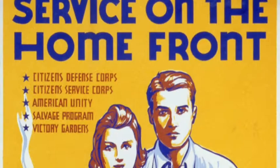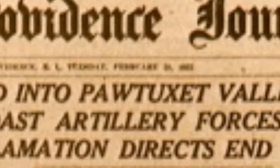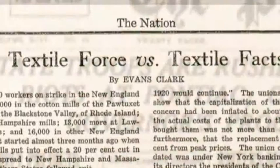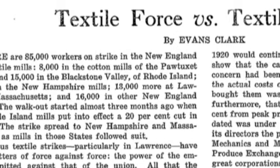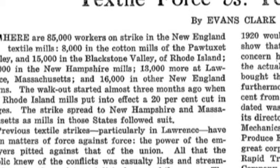World War I revitalized the industry temporarily, as government contracts enabled mills to pay workers more and meet more of their demands. Still, textiles in New England were unarguably on the decline. After the end of World War I, conflict once again set in between workers and bosses, in the form of the textile strike of 1922. "There are 85,000 workers on strike in the New England textile mills, 8,000 in the cotton mills of the Pawtuxet Valley, and 15,000 in the Blackstone Valley of Rhode Island, 33,000 in the New Hampshire mills, 13,000 more at Lawrence, Massachusetts, and 16,000 in other New England towns." — Evans Clark, The Nation.